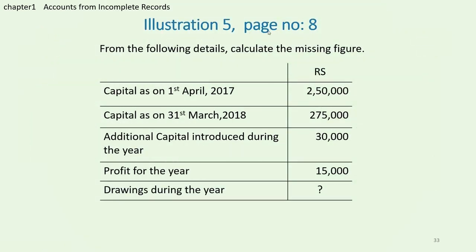Now we look at Illustration 5, page number 8 of your accountancy textbook. From the following details, calculate the missing figure. Capital as on 1st April 2017 is given as 2 lakh 50,000 — the opening capital. Capital as on 31st March 2018 is given as 2 lakh 75,000 — the closing capital. Additional capital introduced during the year is 30,000. Profit for the year is 15,000. Drawings during the year is a question mark — that is what we have to find.